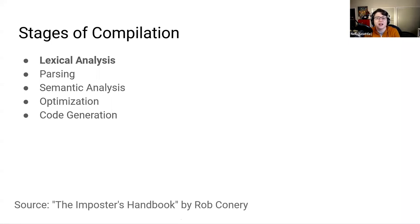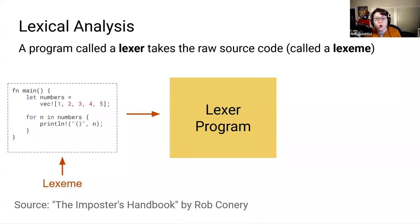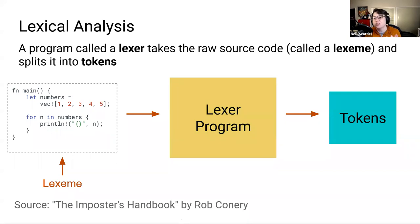Going back to the stages of compilation, let's start with the first one — lexical analysis — and talk about how the Rust compiler executes this step. During lexical analysis, a program within the compiler called a Lexer takes the raw Rust source code, called a Lexeme, and analyzes it, then splits the code into tokens to make it easier for the compiler to parse.